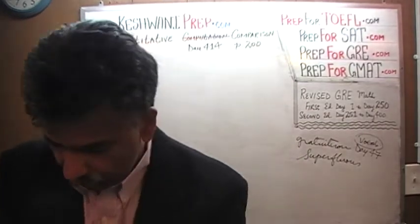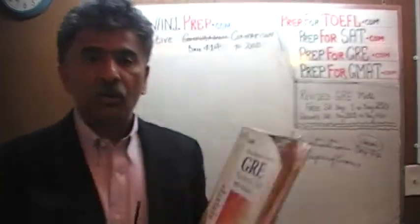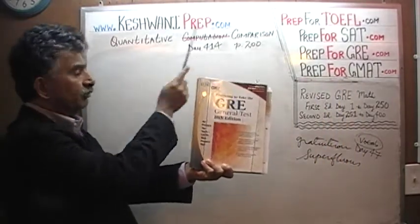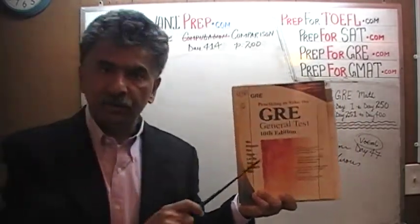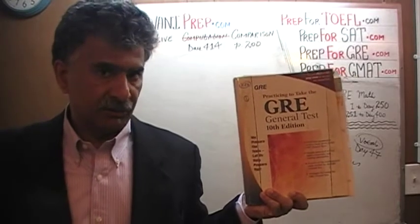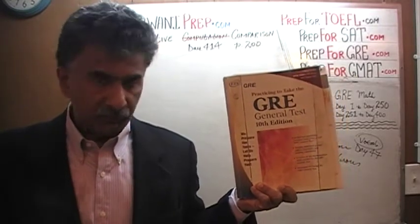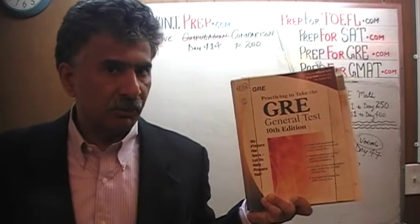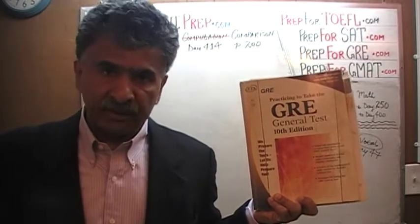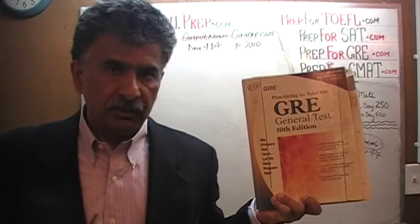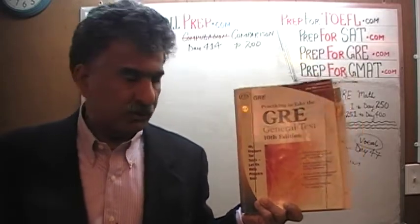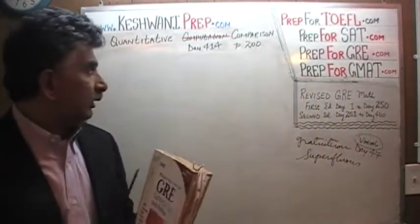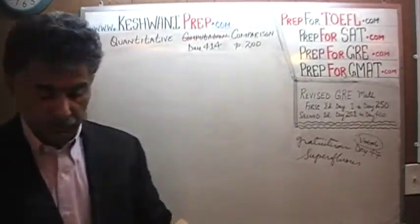Right now we are in the process of solving quantitative comparison questions — out of this book here, the tenth edition of the GRE General Test, the old exam. The Revised GRE books do not contain enough quantitative comparison questions, so for practice purposes we have started doing some from this book starting from day number 401. Right now we are on page number 200. Let's turn to it.